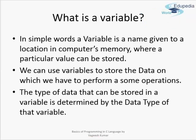So first of all, what is a variable? In simple words, a variable is a name given to a location in a computer's memory where a particular value can be stored. We can use variables to store data on which we have to perform some operations. So if we have to add two numbers, we can use two variables to store both numbers and also a third variable to store the result of the addition.